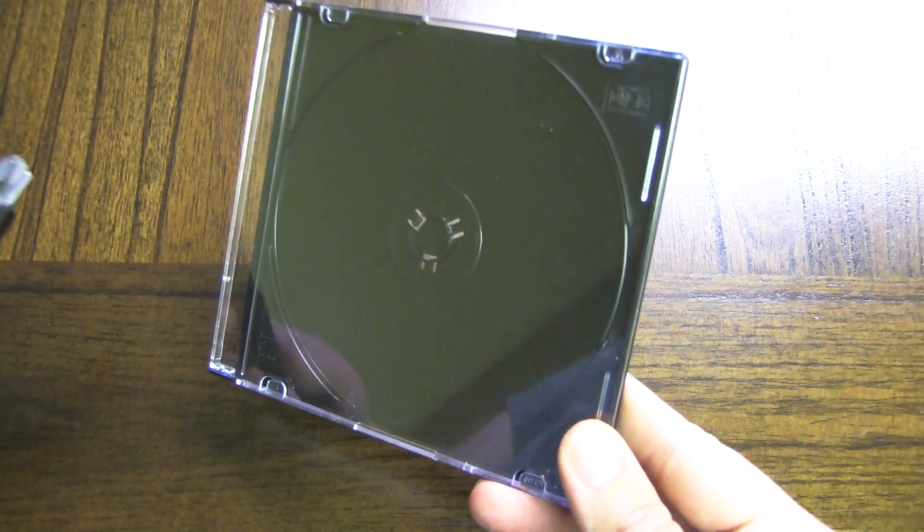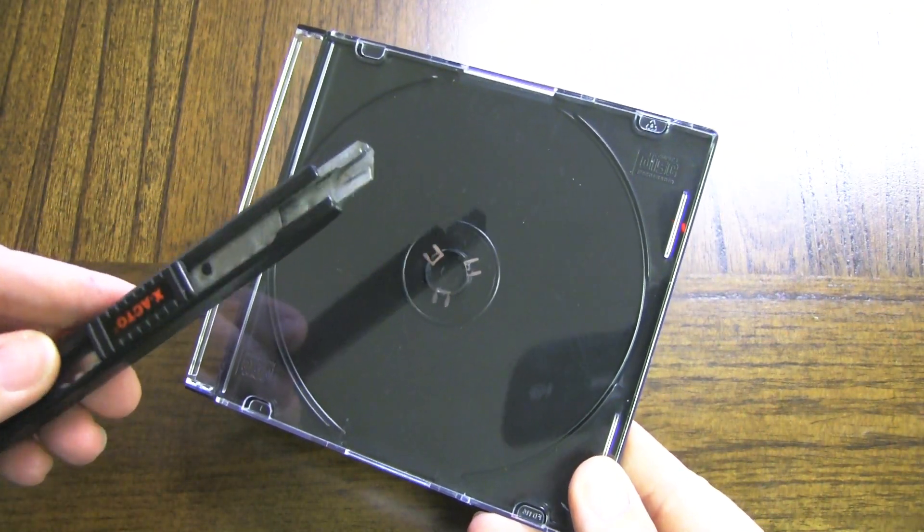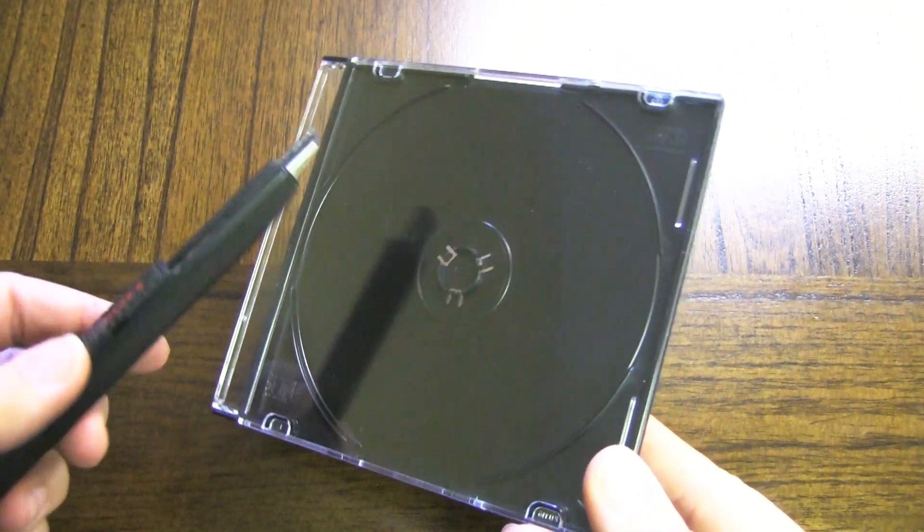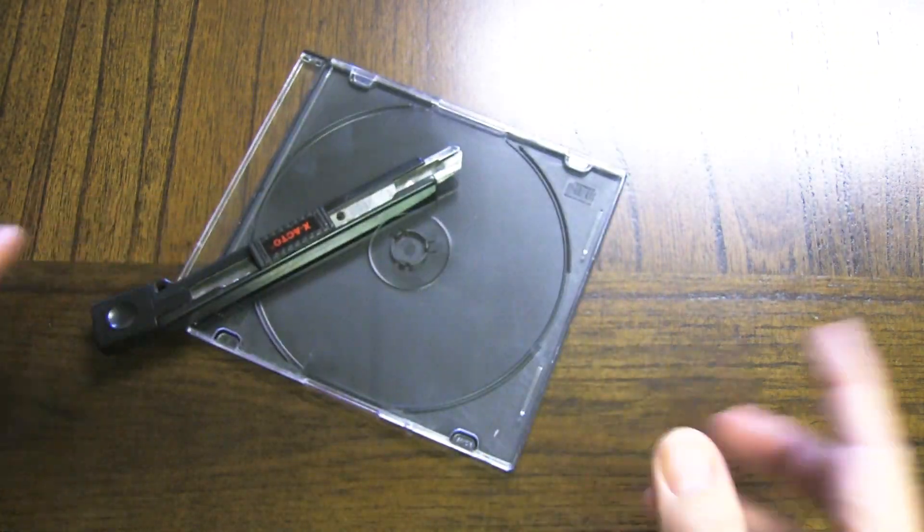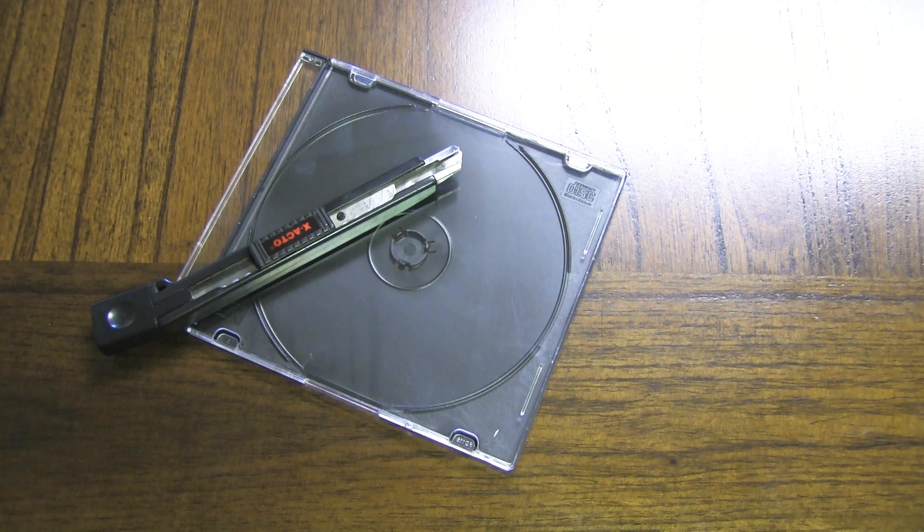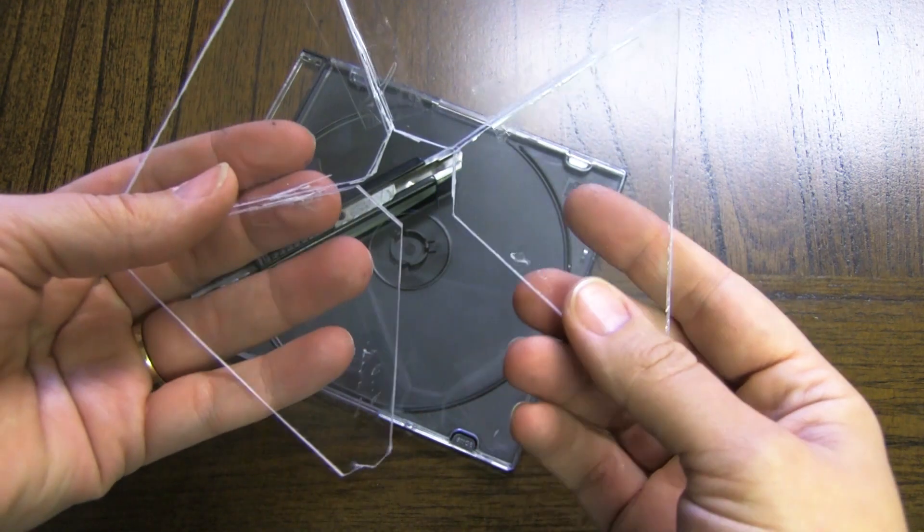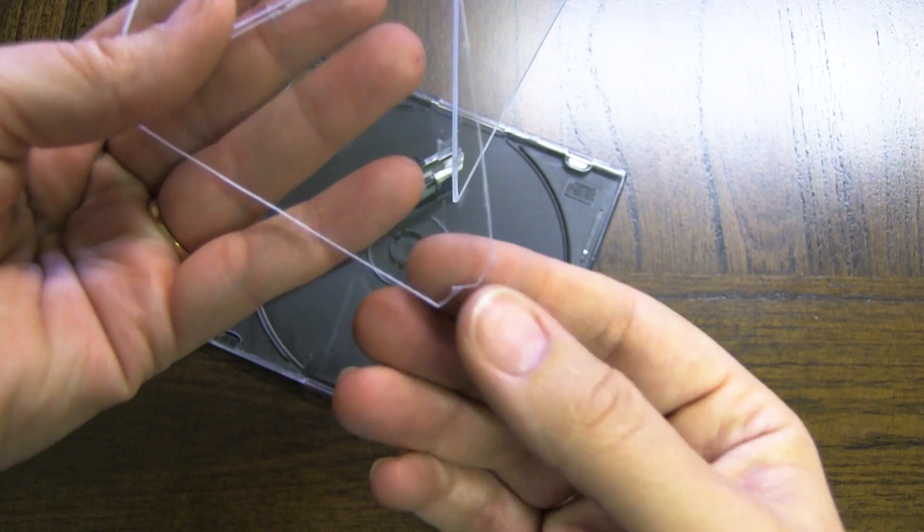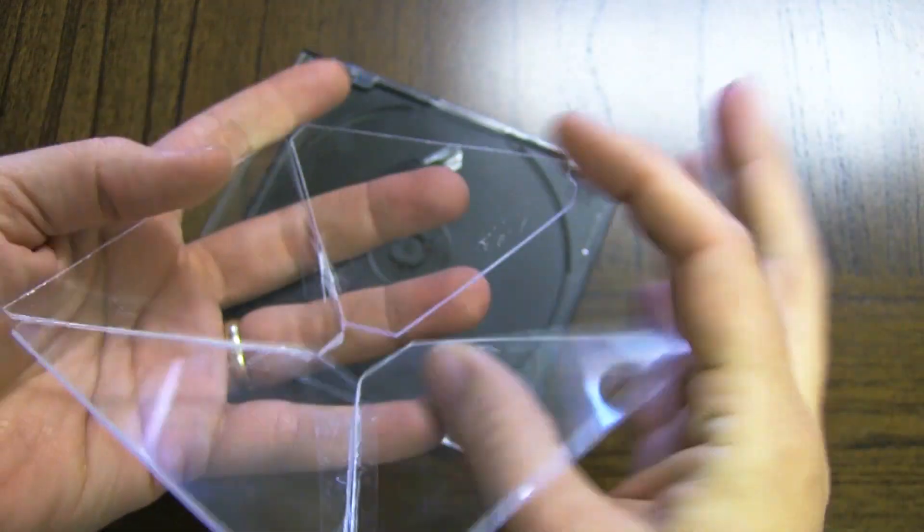There are tutorials online that show you how to make a hologram projector for your phone using a CD case or a jewel case and a utility knife. Trust me, this is easier said than done. It's pretty time-consuming because you have to make a lot of passes with the knife to get through the case, and the plastic snaps easily and it's just too much hassle.